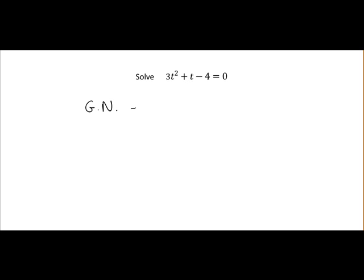So we are going to use the guide number method here. In the guide number method we multiply the t squared coefficient which is 3 by the constant which in this case is minus 4. So always be careful with signs. Make sure you multiply by minus 4. So 3 by minus 4 is equal to minus 12.